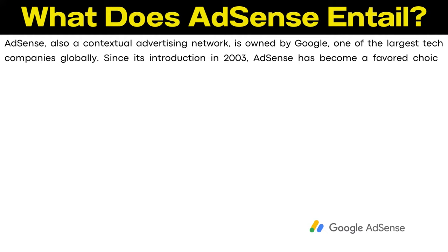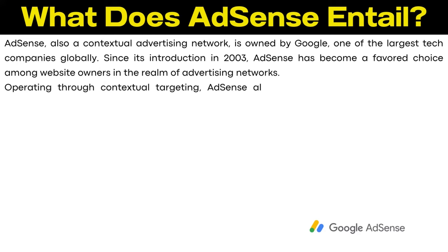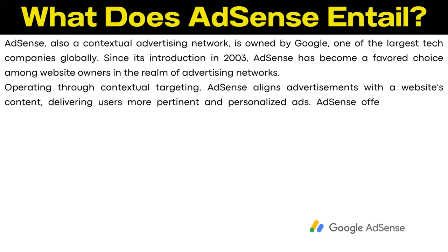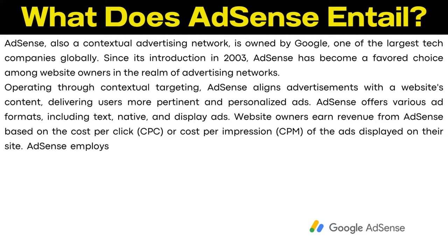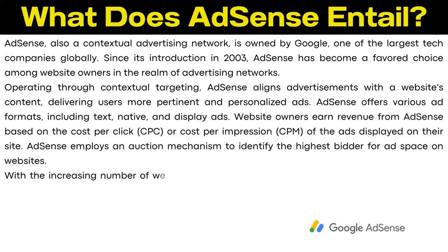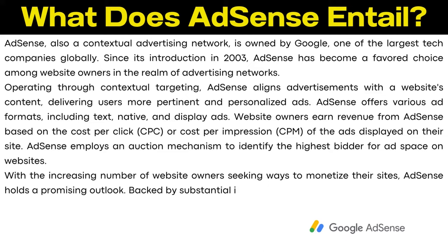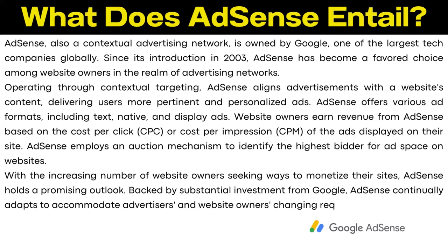Operating through contextual targeting, AdSense aligns advertisements with a website's content, delivering users more pertinent and personalized ads. AdSense offers various ad formats including text, native, and display ads. Website owners earn revenue from AdSense based on the cost-per-click or cost-per-impression of the ads displayed on their site. AdSense employs an auction mechanism to identify the highest bidder for ad space. Backed by substantial investment from Google, AdSense continually adapts to accommodate advertisers and website owners' changing requirements.